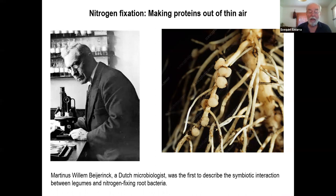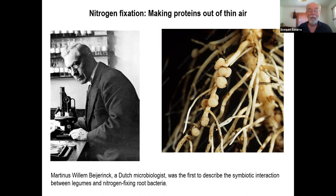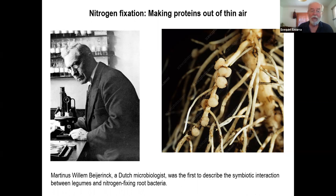Nowadays we can harvest nitrogen from the air by a process known as Haber synthesis, which is an industrial process, but it's very expensive in terms of energy. A large chunk of the CO2 emissions contributing to climate change is emissions made to produce the energy to convert atmospheric nitrogen into fertilizer. The legumes do that for free with the energy they produce from photosynthesis. Until a century ago, rotating crops with legumes was the most powerful way farmers had to maintain soil fertility and crop yields.